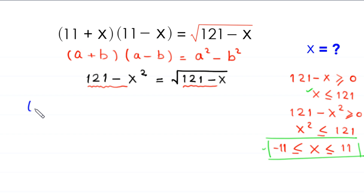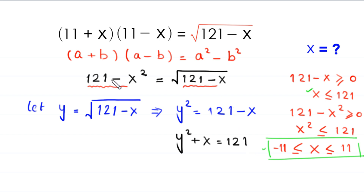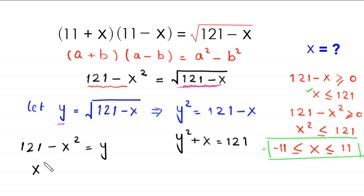Now suppose y equals the square root of (121 minus x). Squaring both sides gives y squared equals 121 minus x, which rearranges to y squared plus x equals 121. Replacing the square root of (121 minus x) with y in the main equation gives 121 minus x squared equals y, which rearranges to x squared plus y equals 121.